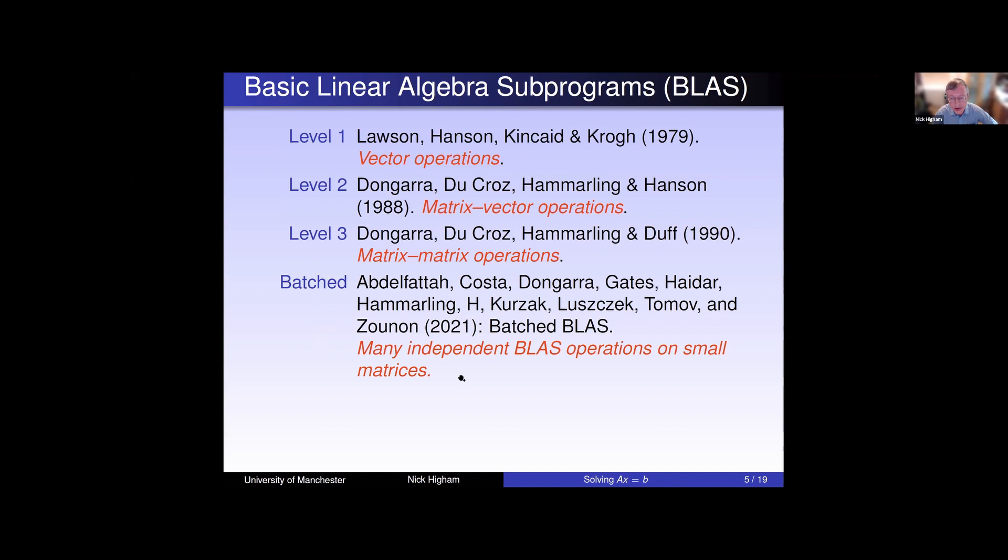Let me mention the more recent development, the batched BLAS. This is motivated by the fact that often nowadays we have many small matrix operations that are independent, particularly on GPUs. So this is a recent paper in TOMS from last month, giving a proposed API for the batch BLAS. This is a way of calling with multiple problems that through one call will be independently executed. The BLAS idea has proved extremely popular.